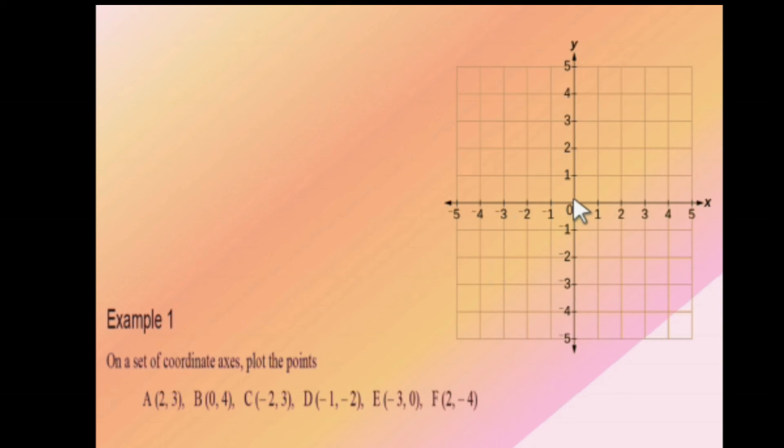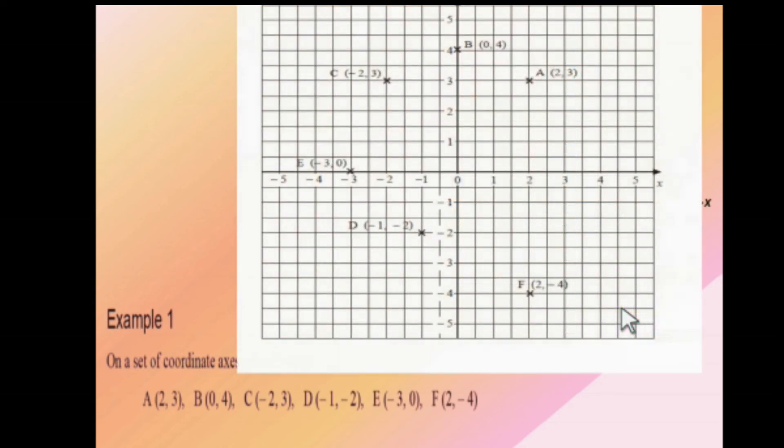Similarly, point F is (2, −4). Go horizontally to 2, then go downward since it's negative — 1, 2, 3, 4. So this is the point (2, −4). You can check and cross-check your answers with this. Take a screenshot if required.